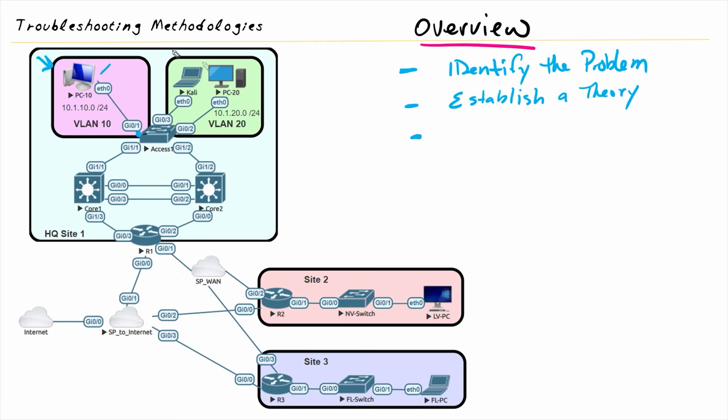And then once we've narrowed it down to what we think it might be, and then the third step is to test, which is to basically go in and prove your theory. If we think the problem is with router one, or if we think the problem was with a multi-layer switch, or we think the problem is with the access layer, we want to do some testing to validate that what we think may be the problem really is causing the problem.